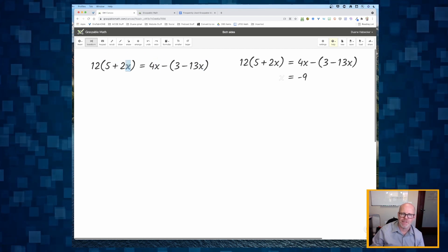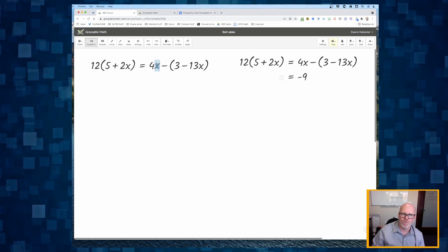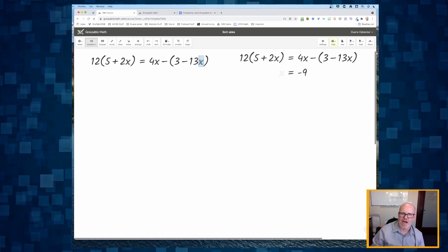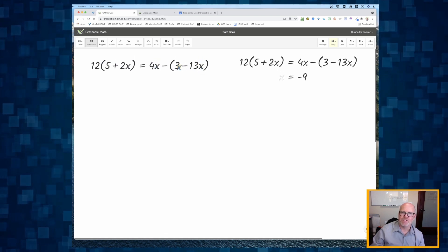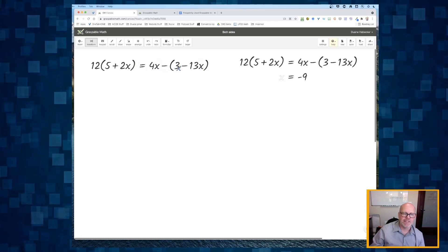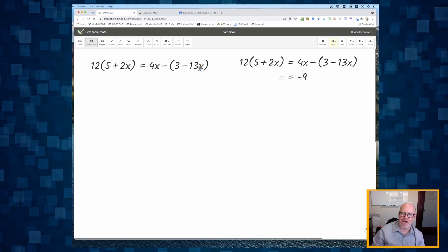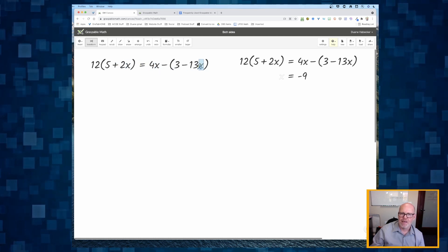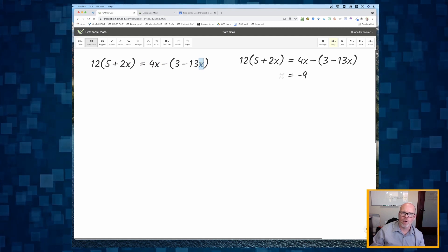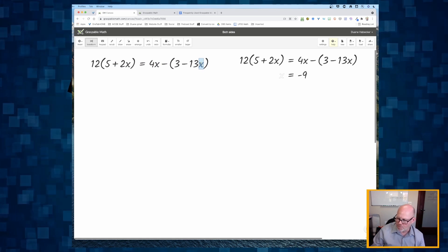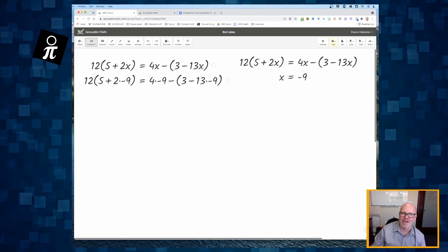But as I mouse over each of the x's, it highlights, doesn't it? And so it doesn't matter which x I highlight. But when I let go, all of the x's are going to be replaced by negative 9.